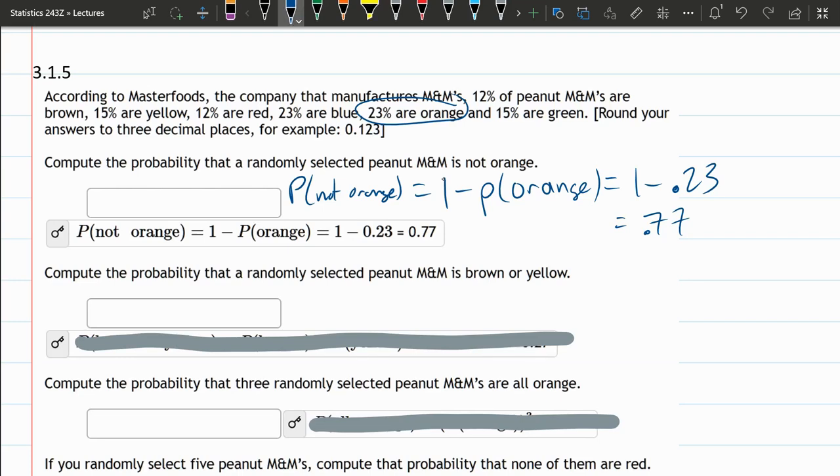Now the next one, compute probability is brown or yellow. So it could be brown, could be yellow, and much higher chance than only brown or yellow by themselves. 15% yellow, 12% brown. So all we have to do is add up the percents.